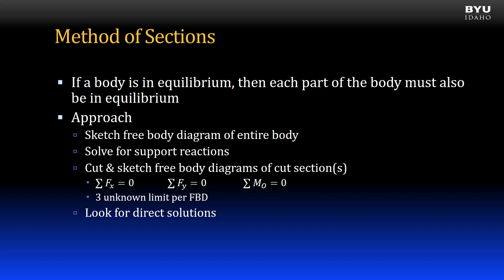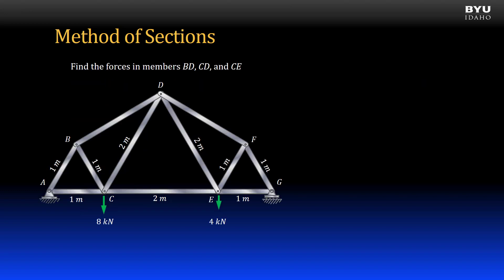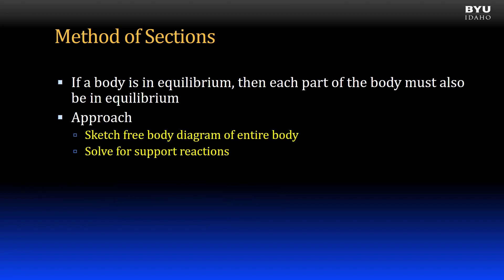Let's look at how we apply the method of sections with an example problem. Here is a truss with 11 members. It has a pin support at A and a roller support at G. There are two applied loads, one at joint C and one at joint E. We want to find the forces in members BD, CD, and CE. Our first steps are to draw a free body diagram of the whole truss, then solve for the support reactions.